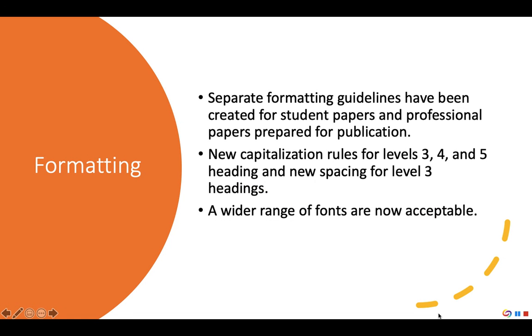APA 7 has also introduced a number of formatting changes including separate formatting guidelines for student papers, new rules for subheadings levels 3, 4, and 5, and a wider range of acceptable fonts.